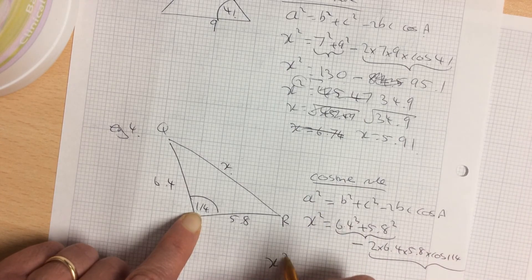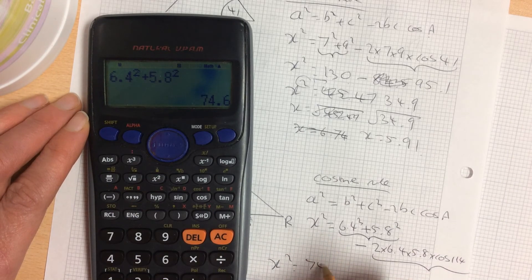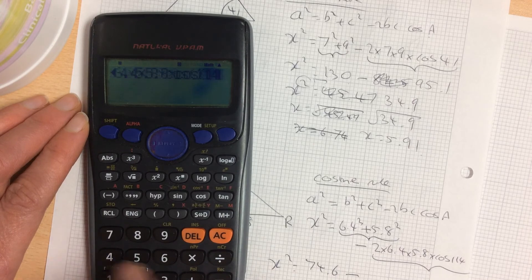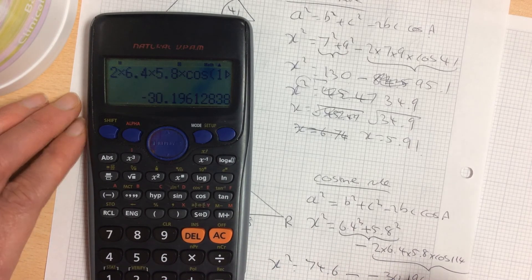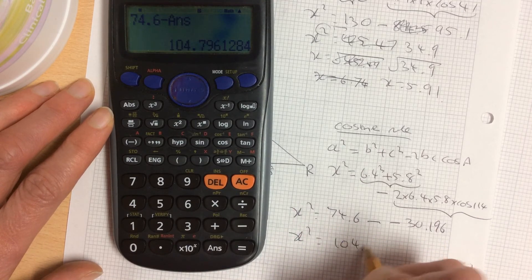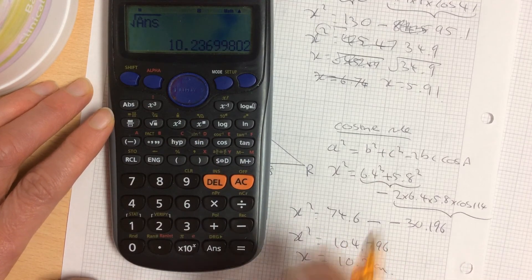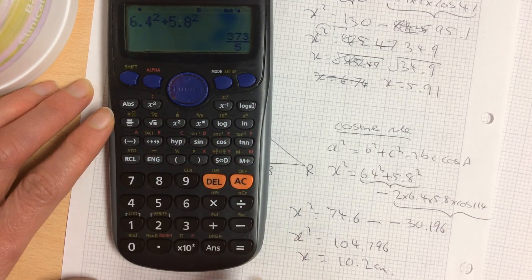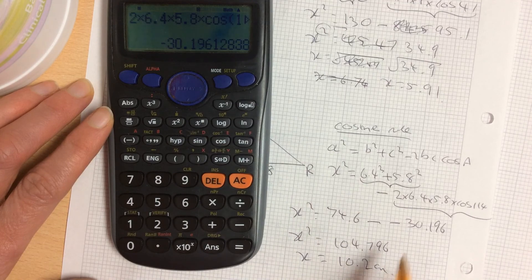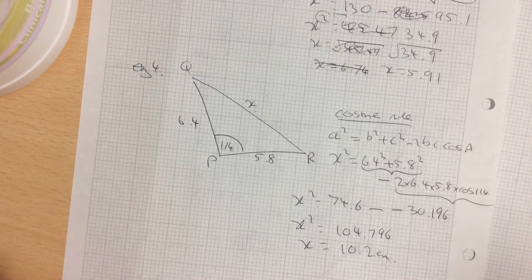Remember I said do them in pairs. So x squared equals 6.4 squared add 5.8 squared to give you 74.6, minus 2 times 6.4 times 5.8 times cosine 114. Watch that minus sign there. The double minus gives you a positive 74.6 minus answer to give you 104.796. So x is the square root of that, which is 10.2 centimeters. I'm going to double check that because there's lots of places to go wrong. 2 times 6.4 times 5.8 times cosine 114. That looks fine. Check your work, it takes a few seconds and you can guarantee it's going to be right. So we are going to practice some of these now.